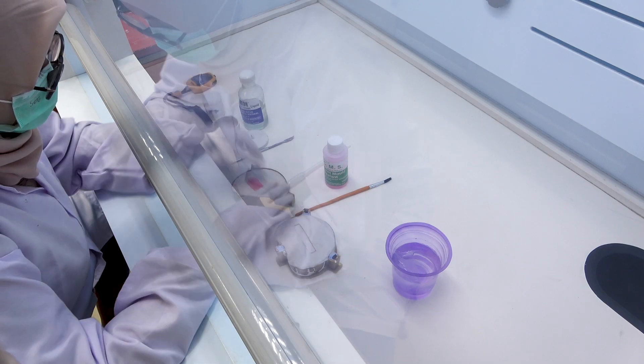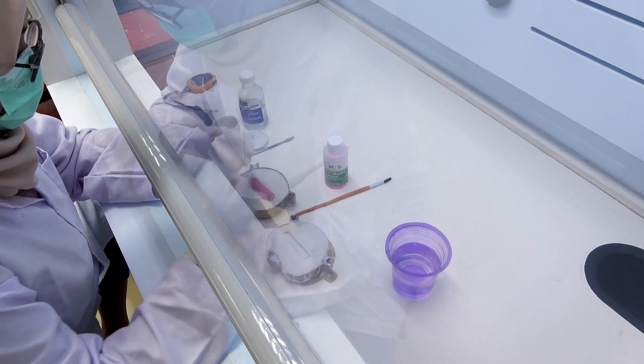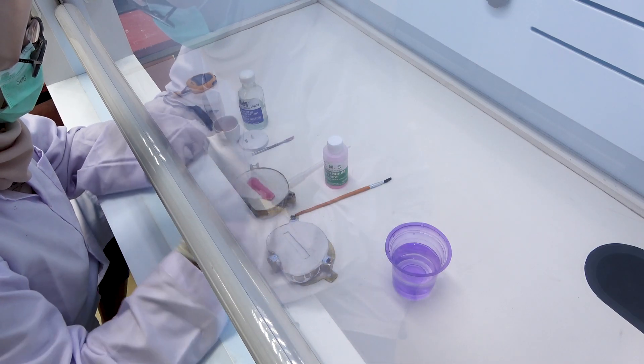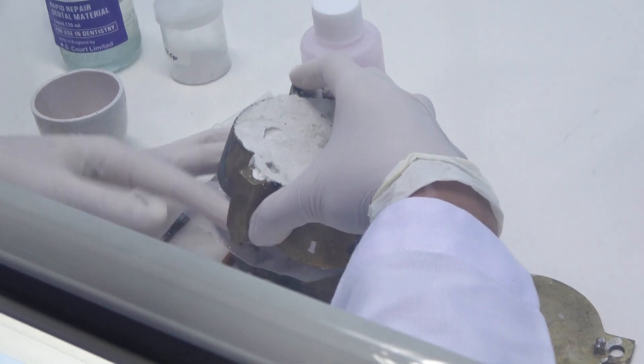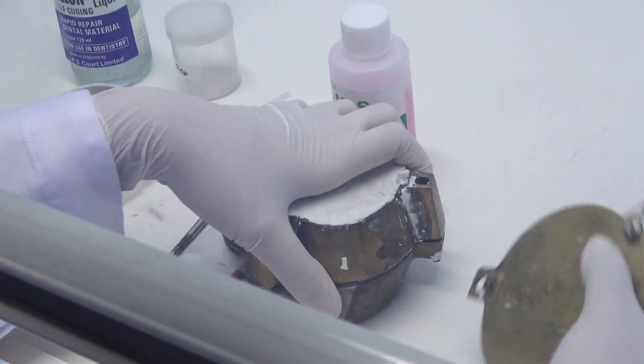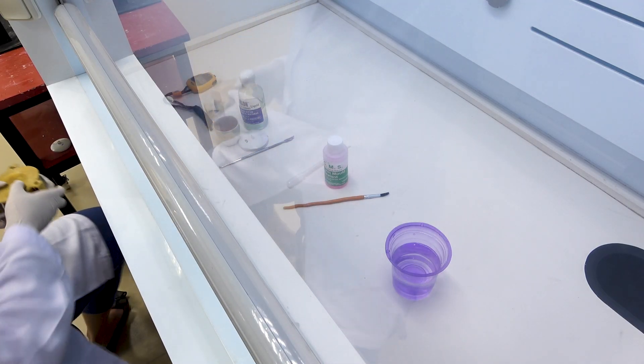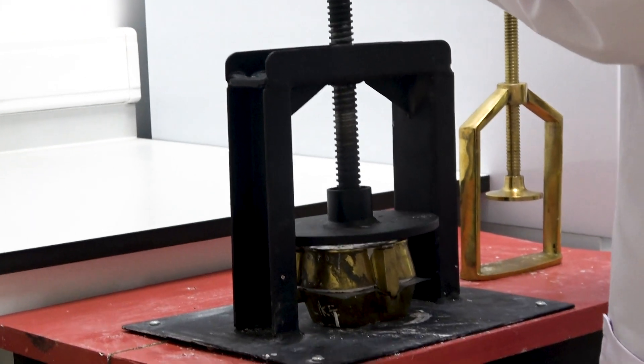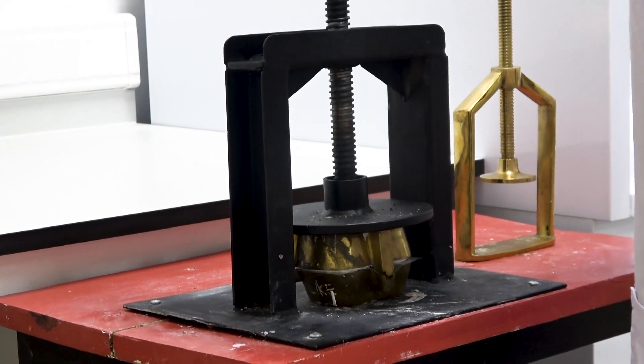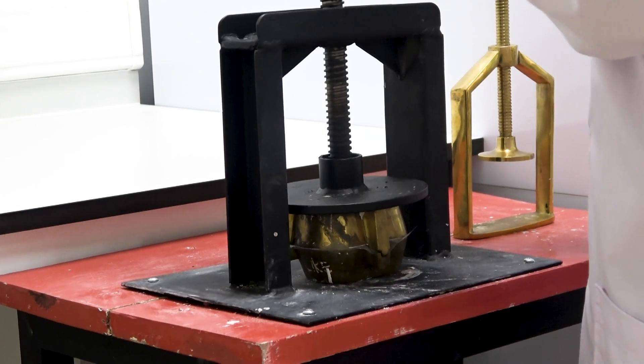Next, place the mixture into the mold on the flask until full. Then cover with water-moistened cellophane plastic. After that, close the flask with the upper flask, but the upper and lower flask should not be too tight.